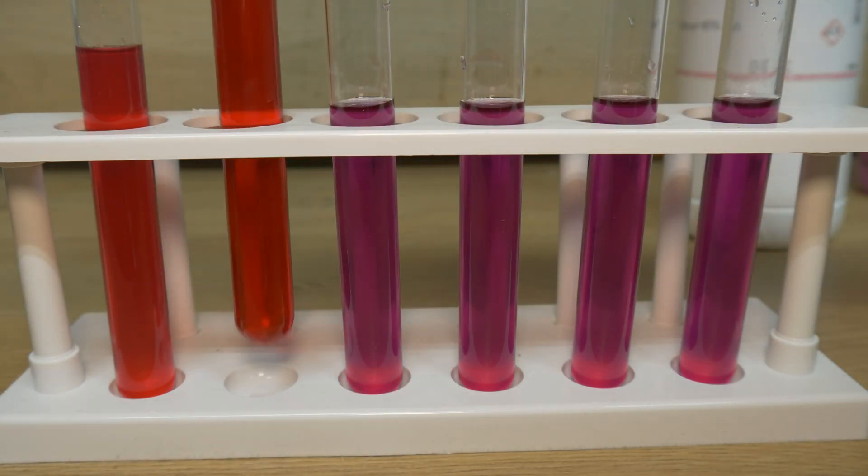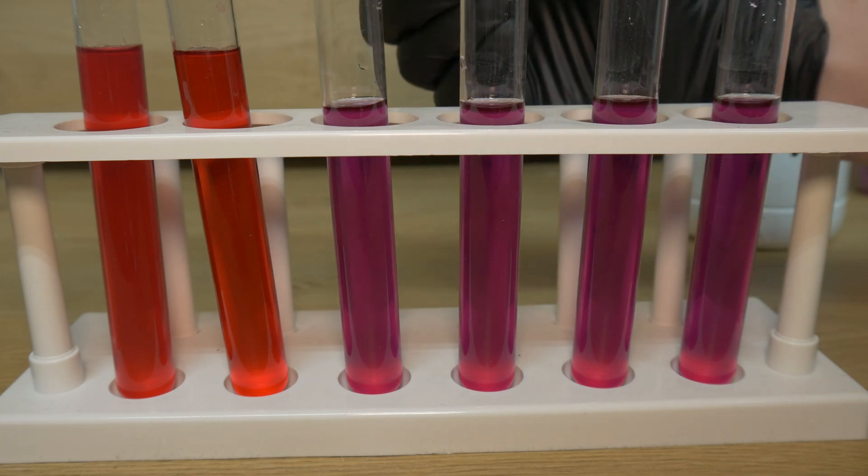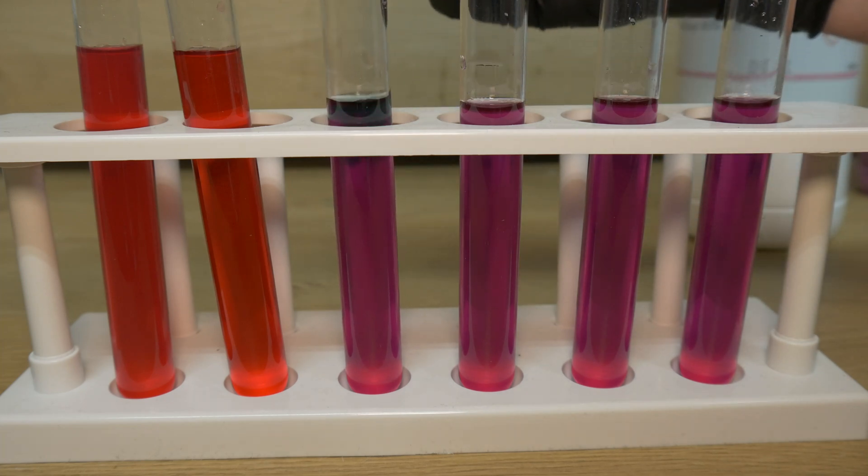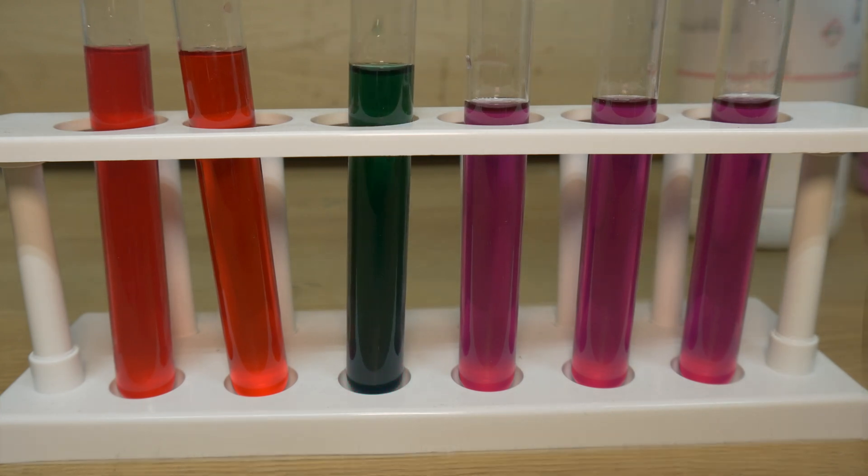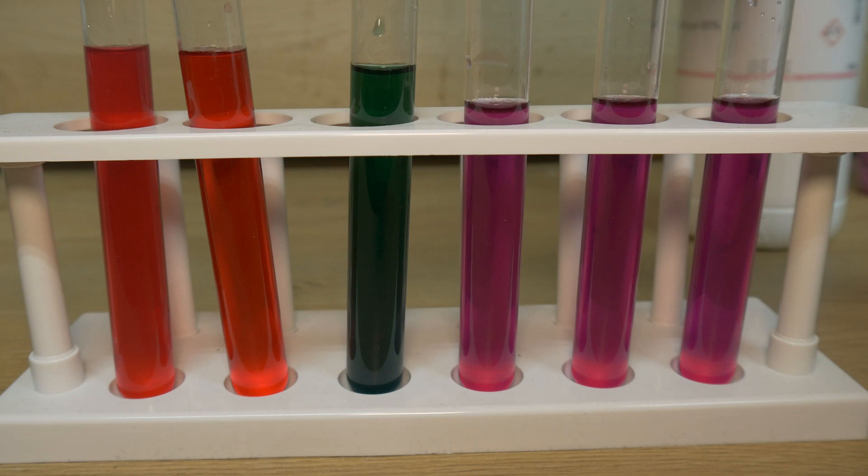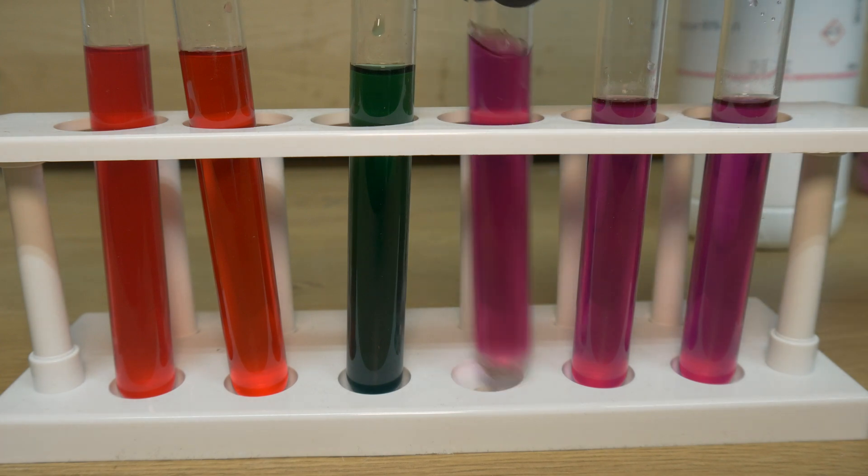Then in test tube number 3 we put ammonia, which immediately turns green, which indicates a pH of 11 to 13. Looking at the greenness at this point, it seems to be more like 11. Now in test tube 4 we put the soap, which is pH neutral. Since the color of the neutral substance is violet, the color remains about the same. The pH is estimated between 6 and 8, so I think we can consider it 7.